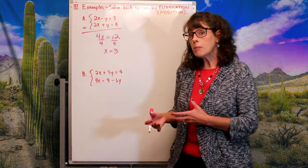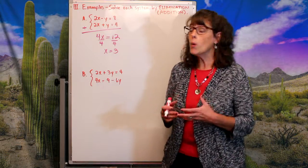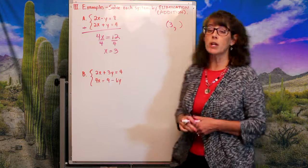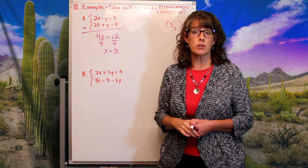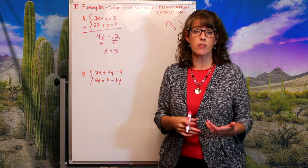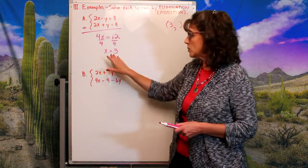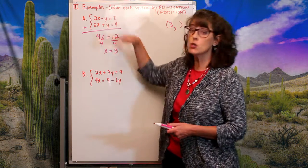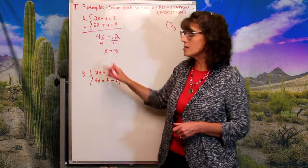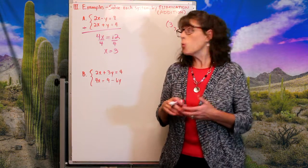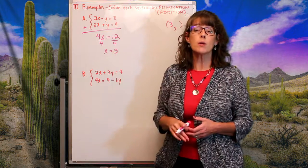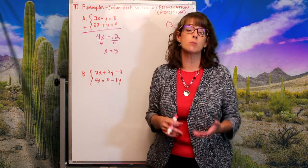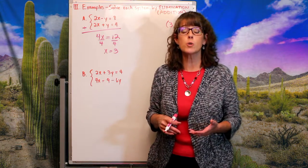I'm looking for the point of intersection, which has an x coordinate and a y coordinate. I've figured out the x coordinate — how do I find y? Just like in the method of substitution: once we've found one variable, we take that value — the 3 — and plug it into either equation where we see an x, then solve for y.